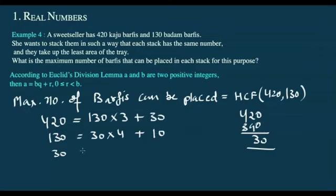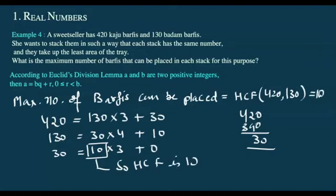30 equals 10 times 3, which gives 30 minus 30 equals 0 remainder. So HCF is 10. Maximum number of barfis that can be placed is 10.